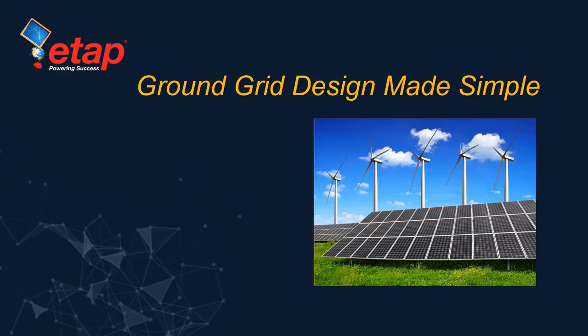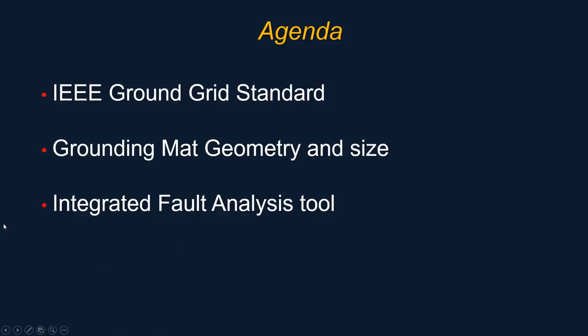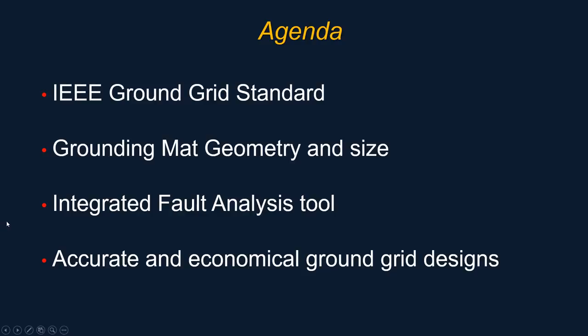Let's go ahead and get started. For the agenda today, we're going to be covering the following: the IEEE ground grid standards that apply to this utility; grounding mat geometry and size and how to define that in the program; the integrated fault analysis tool, which is very important because engineers can now perform the single line to ground fault taken straight from ETAP — from the report — and populate that as the input for the step and touch potential calculation. Everything is integrated into one database. There is no need to swap between different interfaces or go into a third-party program.